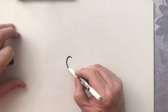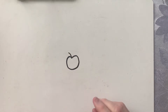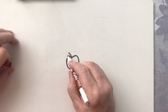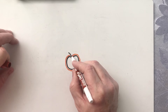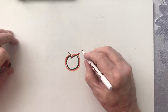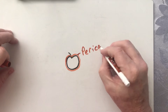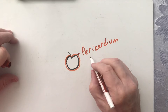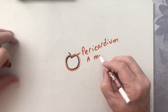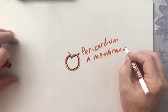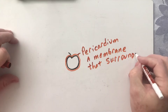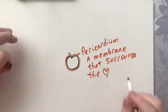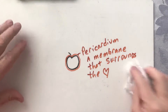To give you an idea of the pericardial sac, imagine you have an apple, and then you take a piece of paper and surround it around the apple. That piece of paper would basically represent my pericardium. The pericardium, also known as the pericardial sac, is a membrane that surrounds the heart.